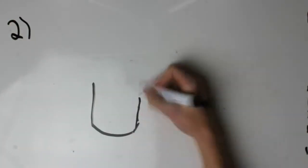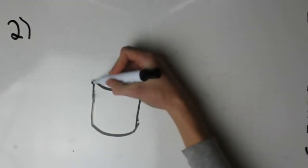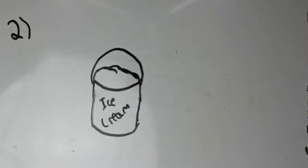Step 2. Buy a gallon of vanilla ice cream. It does not matter what brand you buy, just make sure it is vanilla.